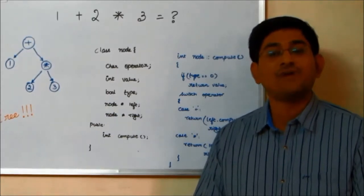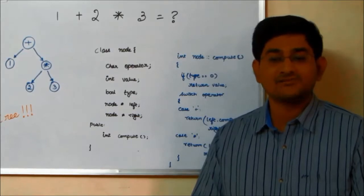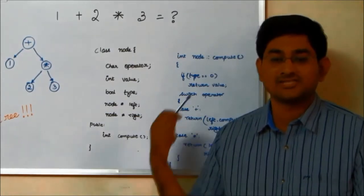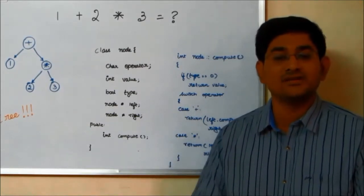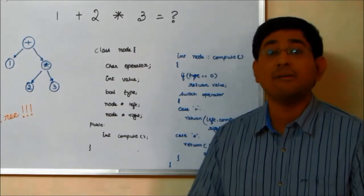We can split the node class into value node and operator node. Both are derived from the abstract or virtual base class node. Now the compute function of the value node returns just the value and the compute of the operator node returns the computed operation. By this, we just solve the first problem of memory inefficiency.